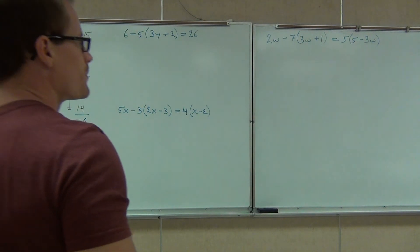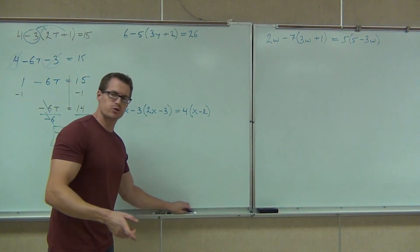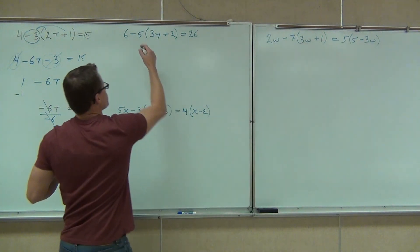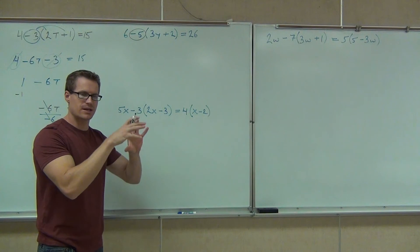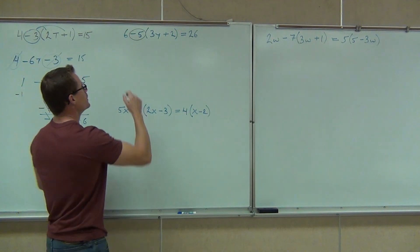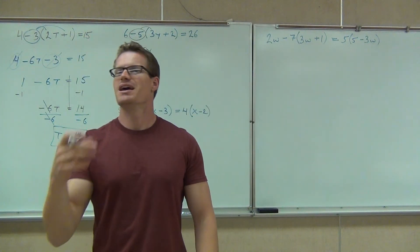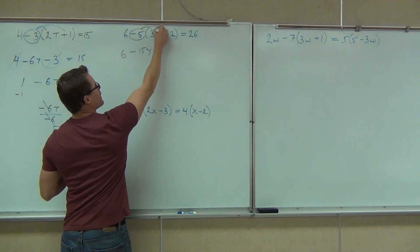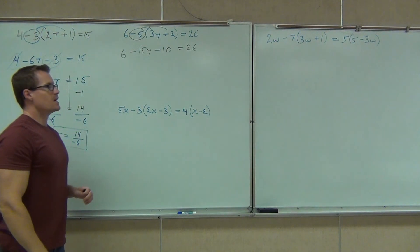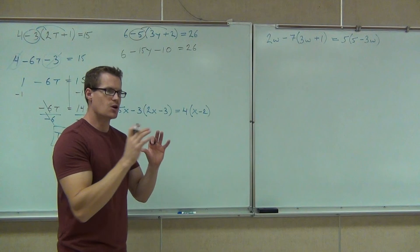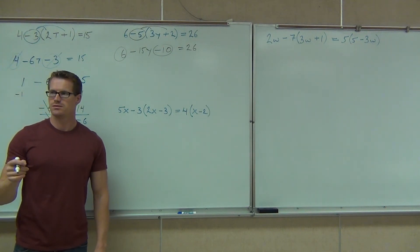We're going to get started on the first one. The first thing you need to do is not subtract — we're not doing 6 minus 5. We're distributing, because the order of operations says multiplication comes before subtraction. We're distributing negative 5 — you have to circle that number with the sign. So we have the 6, then minus 15y. If we distribute negative 5 times positive 2, we need to be getting minus 10 there. Did you get minus 10? Yes. Good. And that equals 26.